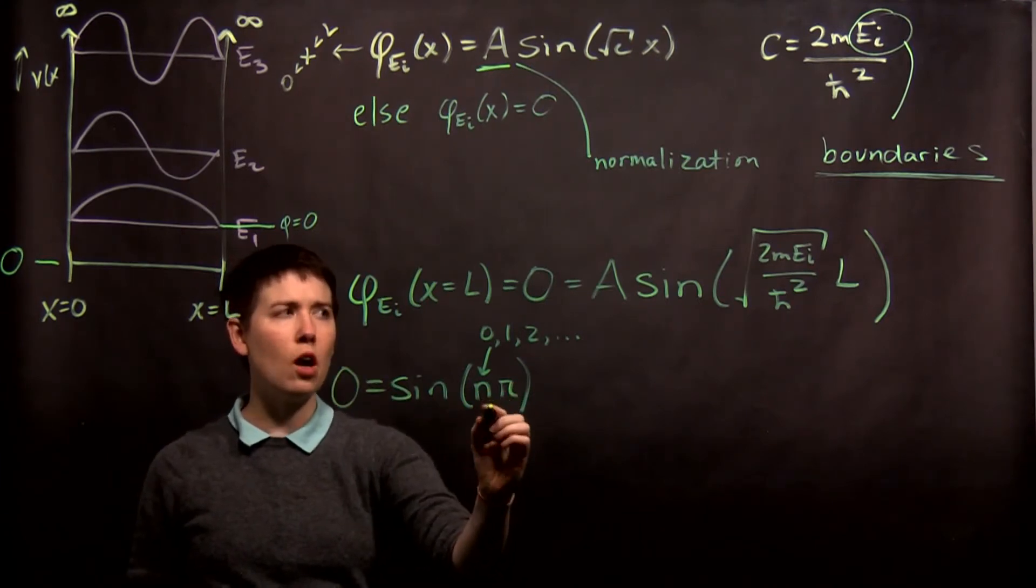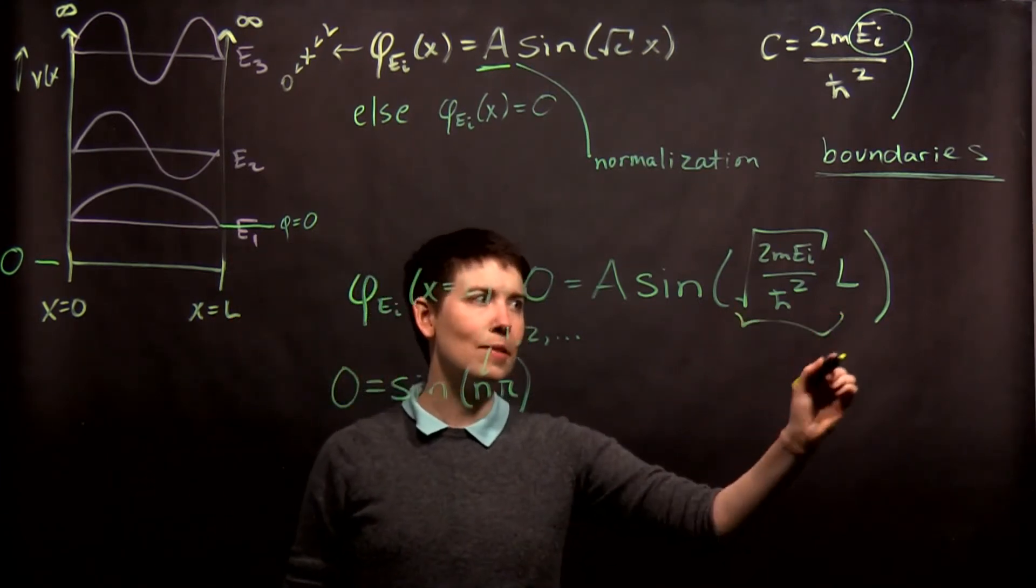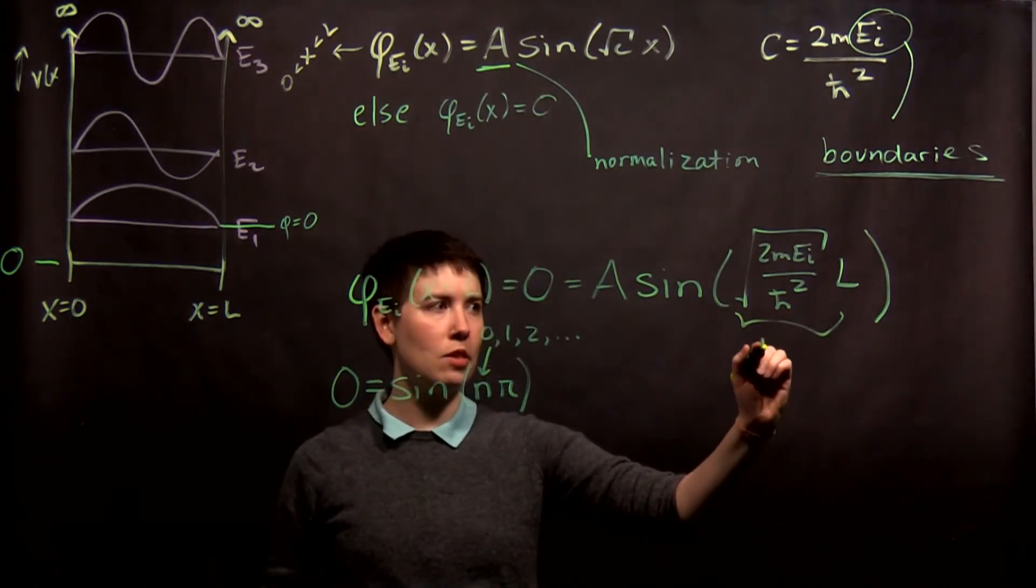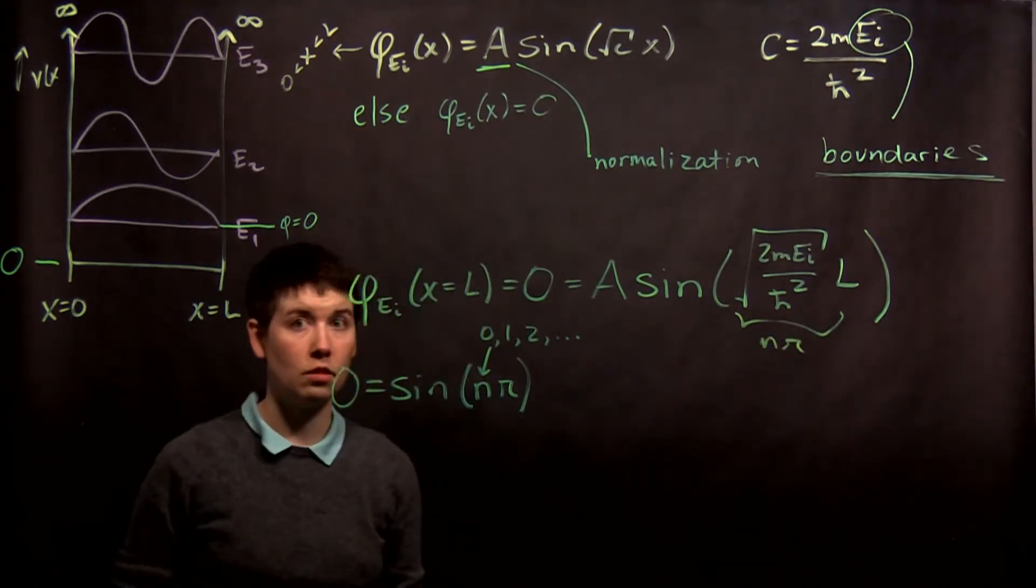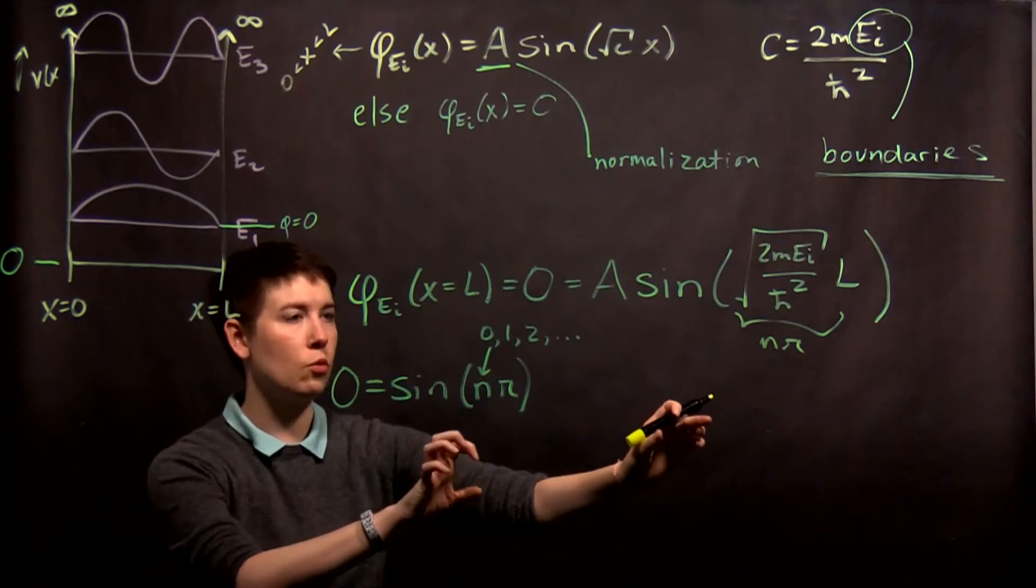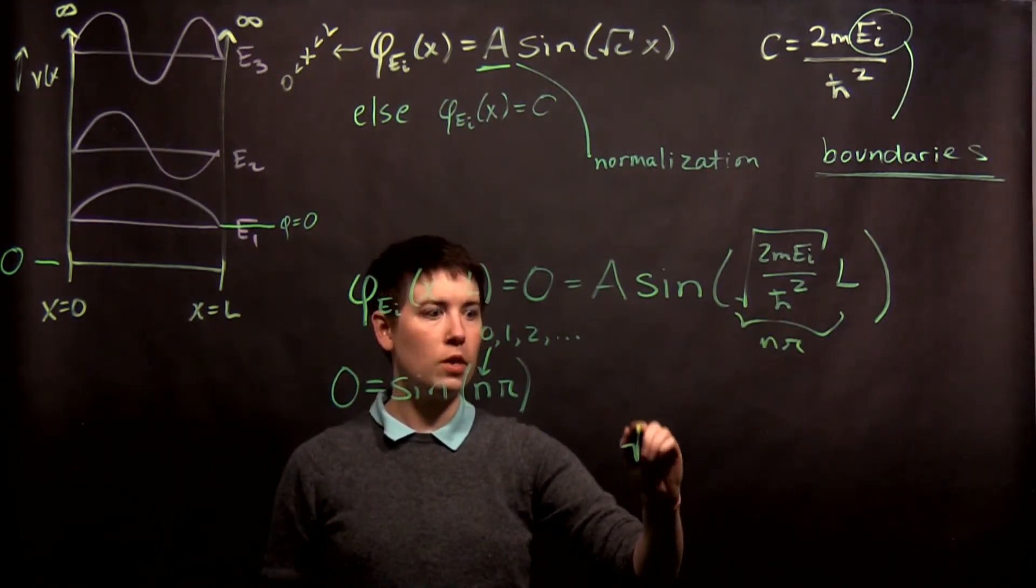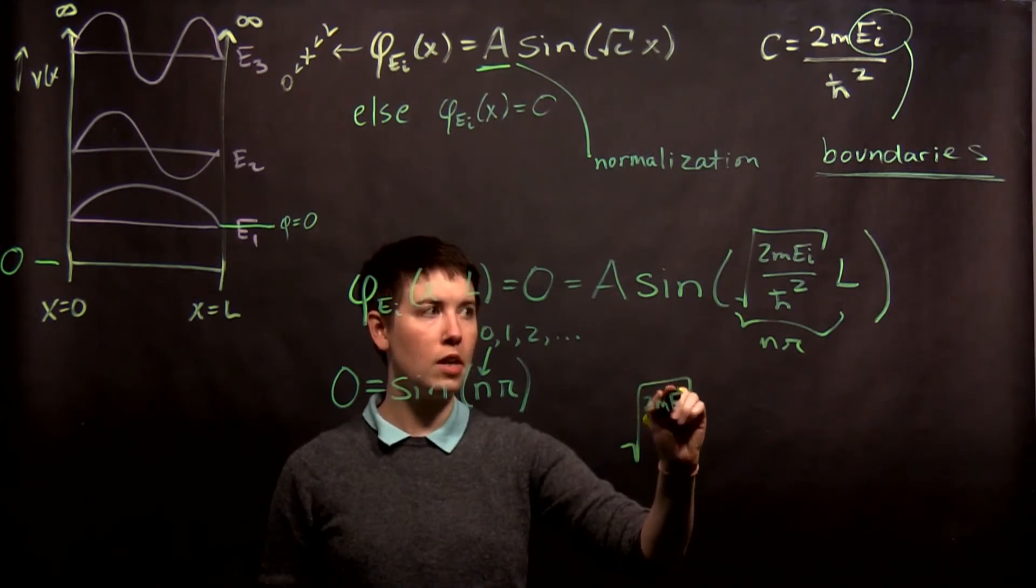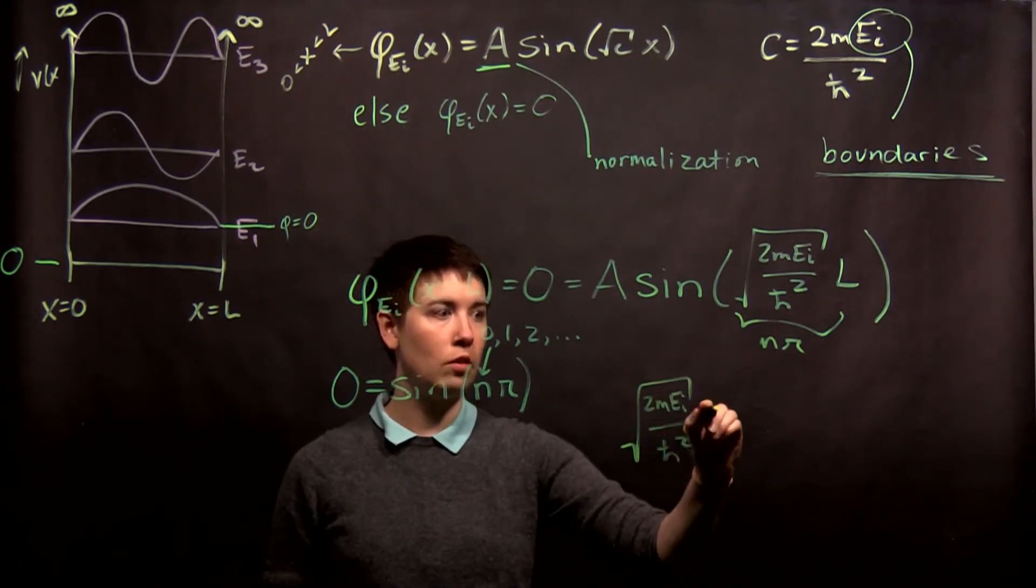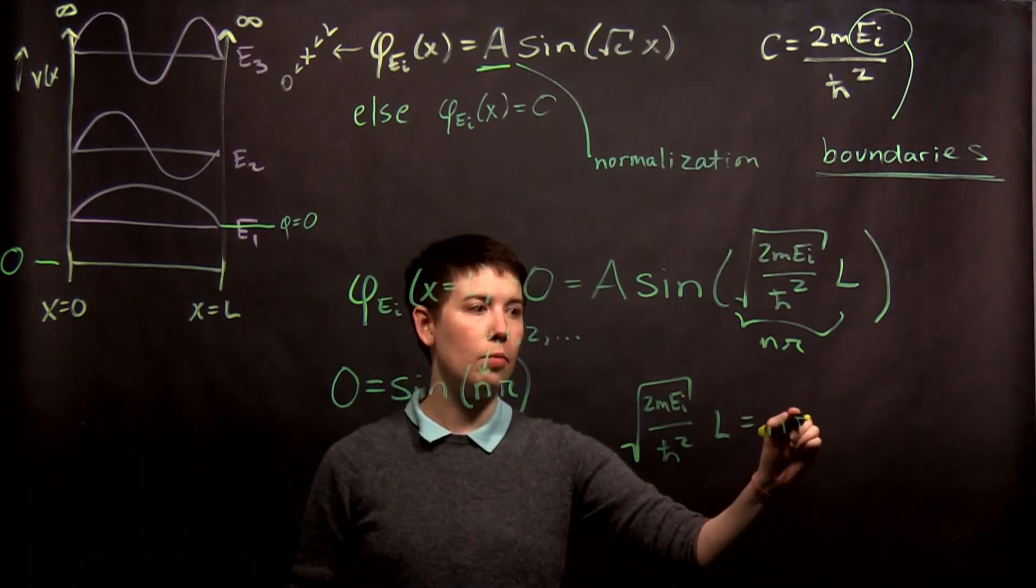So, what we then can say is, oh, this inside in fact has to equal n pi. So, at this point, we can just work with the inside of the function. And so, I get to say that my square root of 2m e_i over h bar squared times L equals n pi.